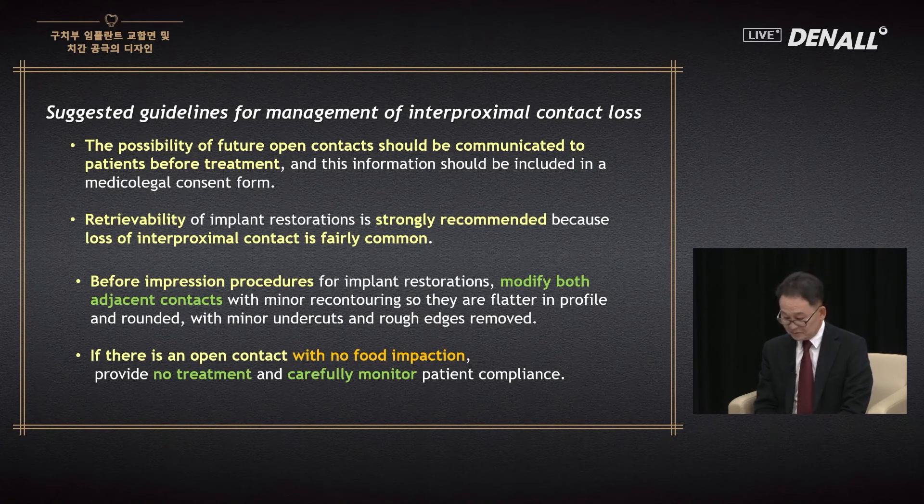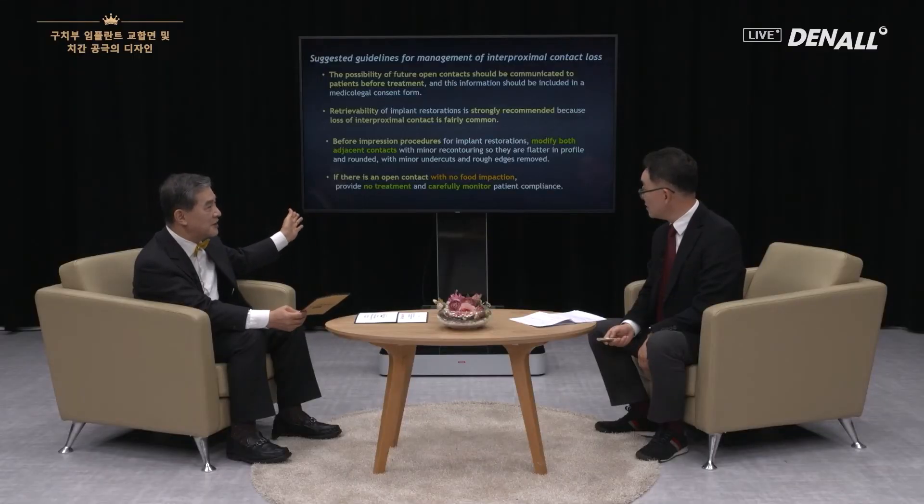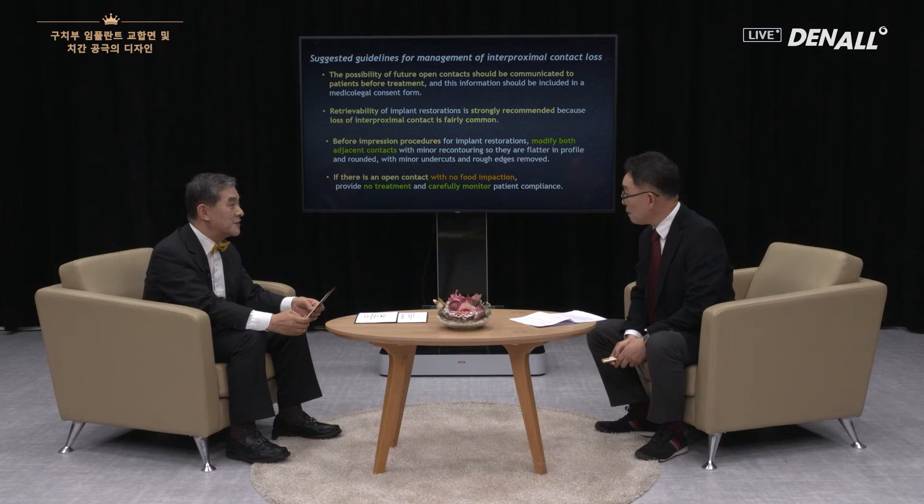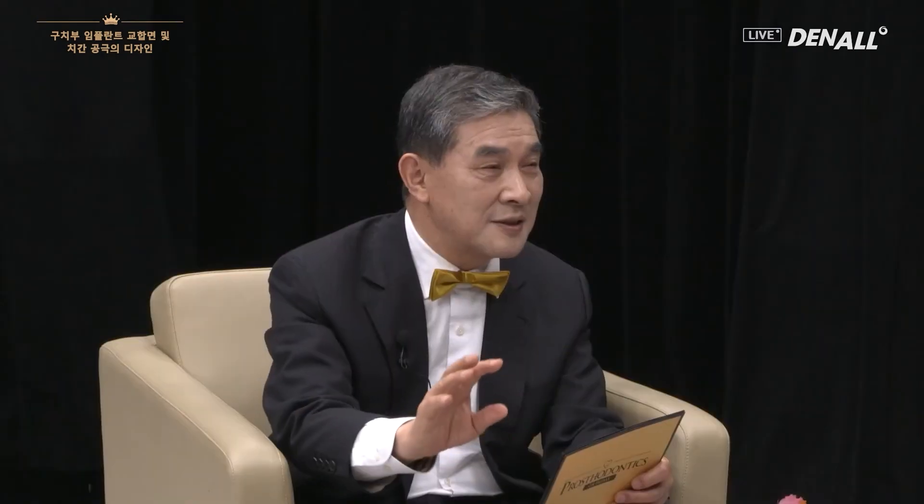The eight items in the guideline and the paper mentioned — getting an ICF from the patient after explaining about the open contact that will happen over time — that was pretty shocking in an amazing way. I've never obtained an ICF signature from a patient. I will follow that. If we explain it in advance and later it happens, the patient would think, 'Oh, this doctor can predict what will happen.' Otherwise, we will be criticized — so explaining it in advance is very important.